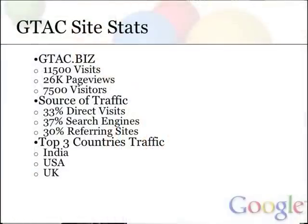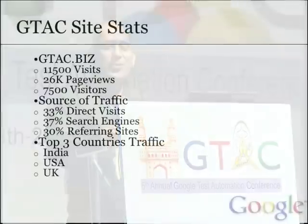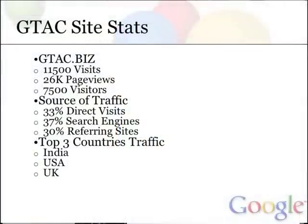Just some stats about our site: we had about 11,000-plus visits, 26,000 page views, and 7,500 unique visitors. That speaks to the interest that is available in GTAC. 33% of these were direct hits to the GTAC.biz site, 37% from search engines, and 30% from referring sites — mostly conference sites we enrolled into and the Google Testing Blog. The top three countries for traffic: the first is no surprise, as this event is being held in India for the first time, followed by the US and the UK.